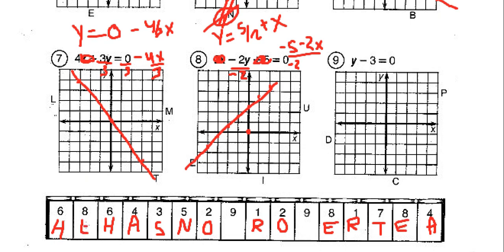And we've got one left. Number 9 — easy one. We just add 3 to both sides to give us y = positive 3. That's 1, 2, 3 — right through the P. And we've solved our question: the reason why a poor man drinks coffee — he has no proper T!